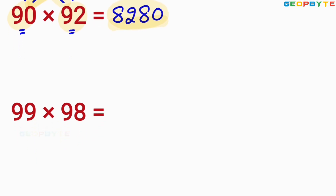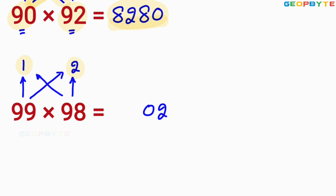Similarly, let us take one more multiplication. Here, 98 is less than 100 by 2. 99 is less than 100 by 1. You multiply 1 and 2. 1 into 2 is 2, but it should be written in terms of 2 digits: 02. Then you take 99 minus 2 or 98 minus 1. 99 minus 2 is 97, or 98 minus 1 also equal to 97. Write that 97 here for getting your answer. 9702 is the multiplication of 99 and 98.